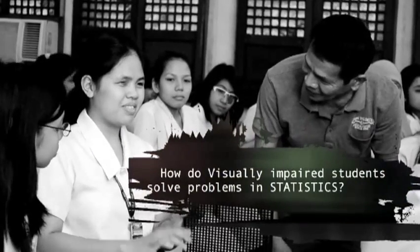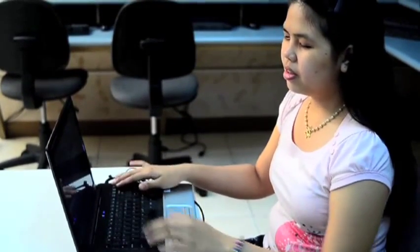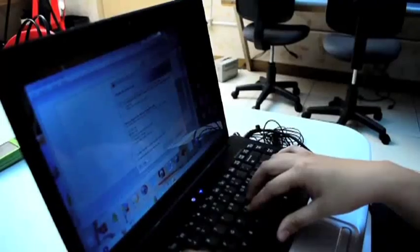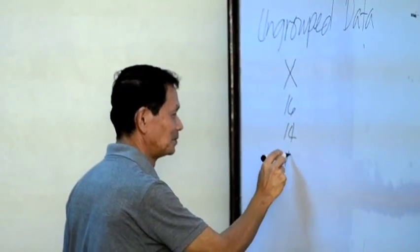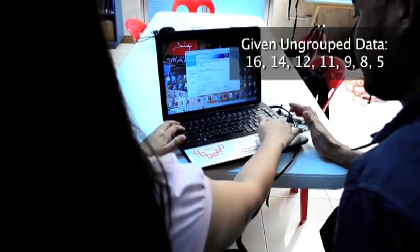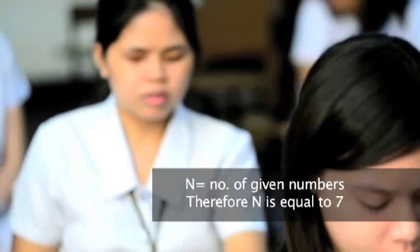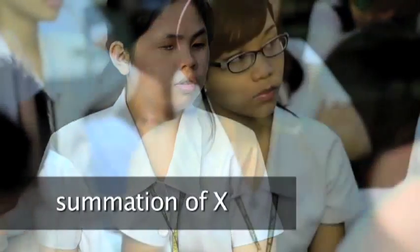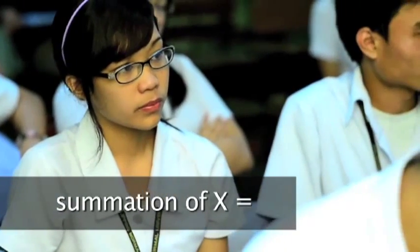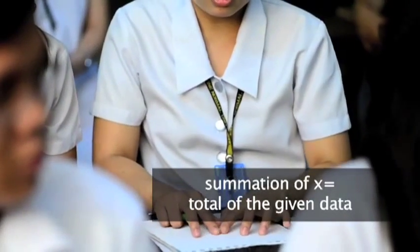How do the visually impaired students solve problems in statistics? Any visually impaired student can access different computer applications like Microsoft Excel. The instructor will discuss how to solve the group mean, then the students with their netbooks will use screen reader, input data and formula to get the group mean. So the summation of x now is equal to 75.